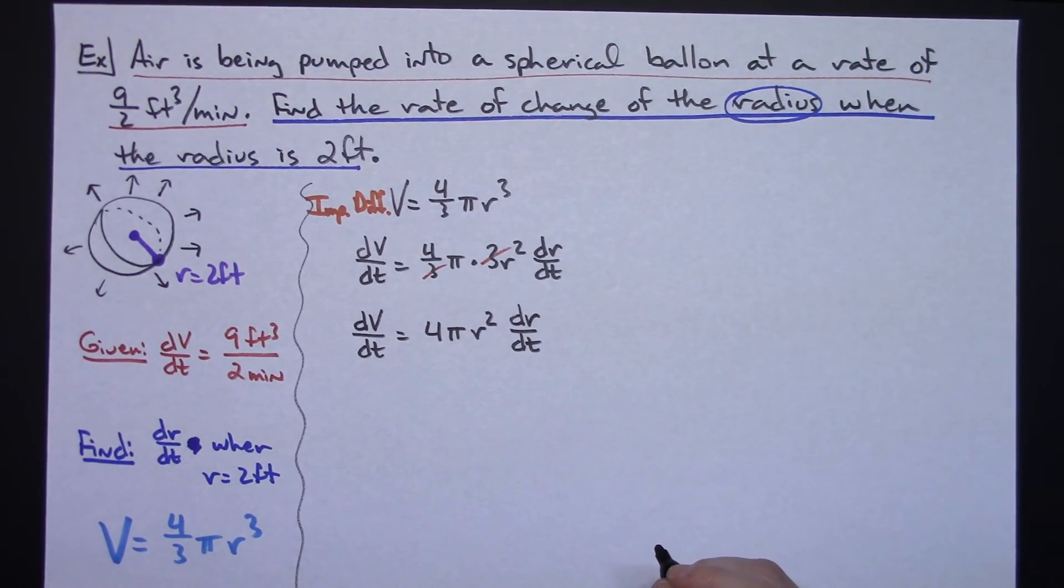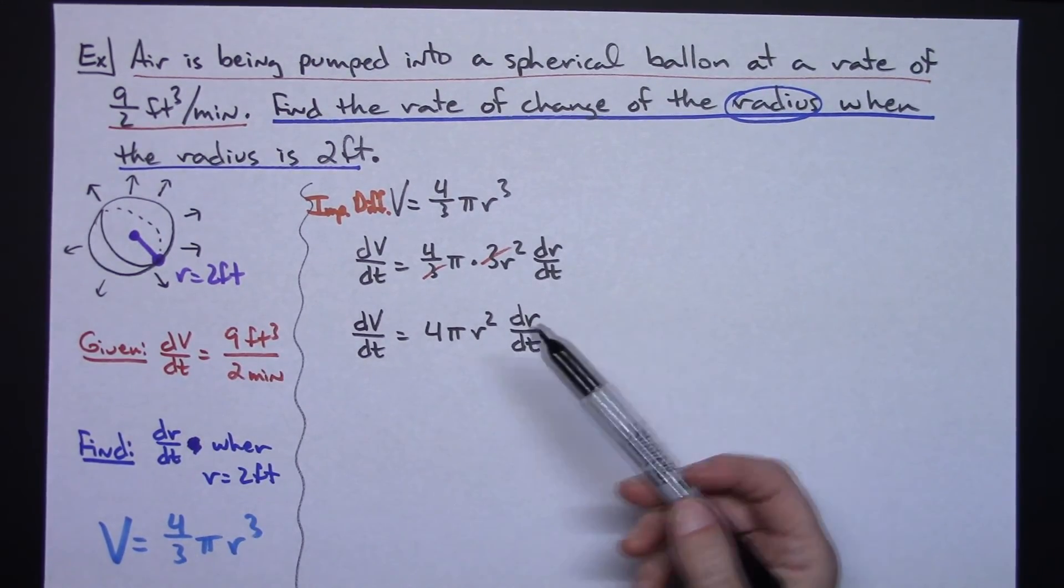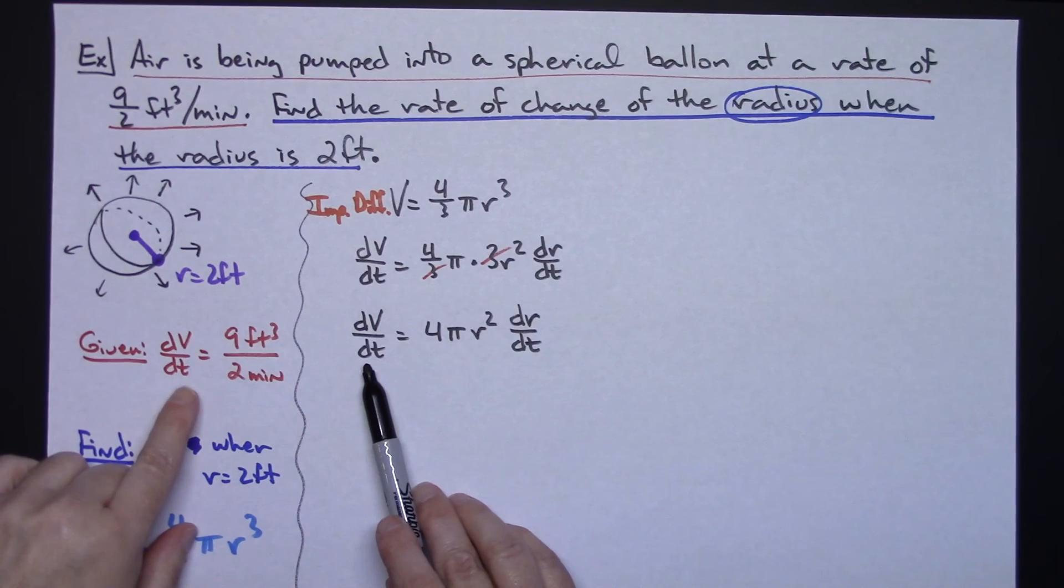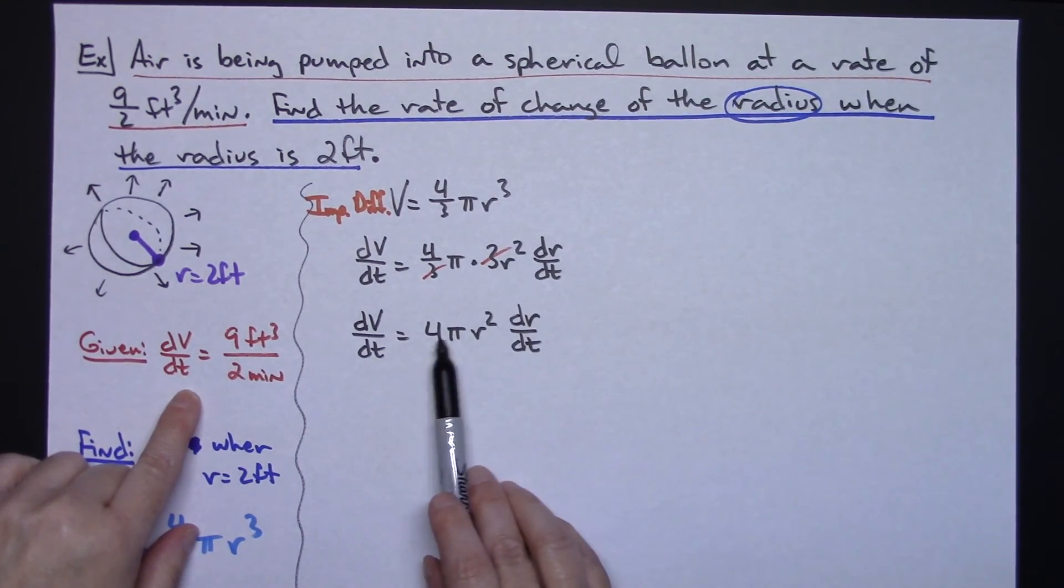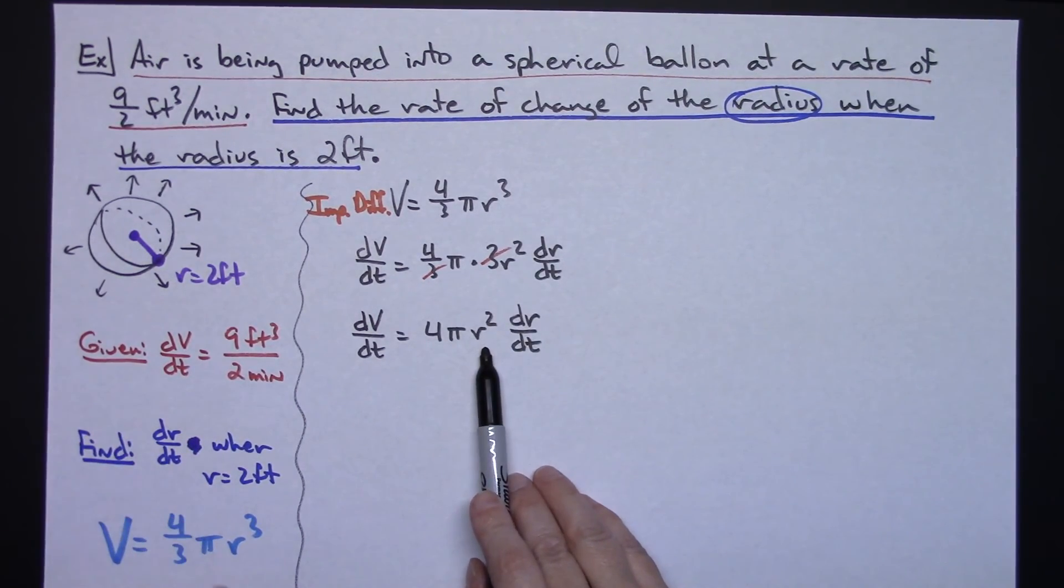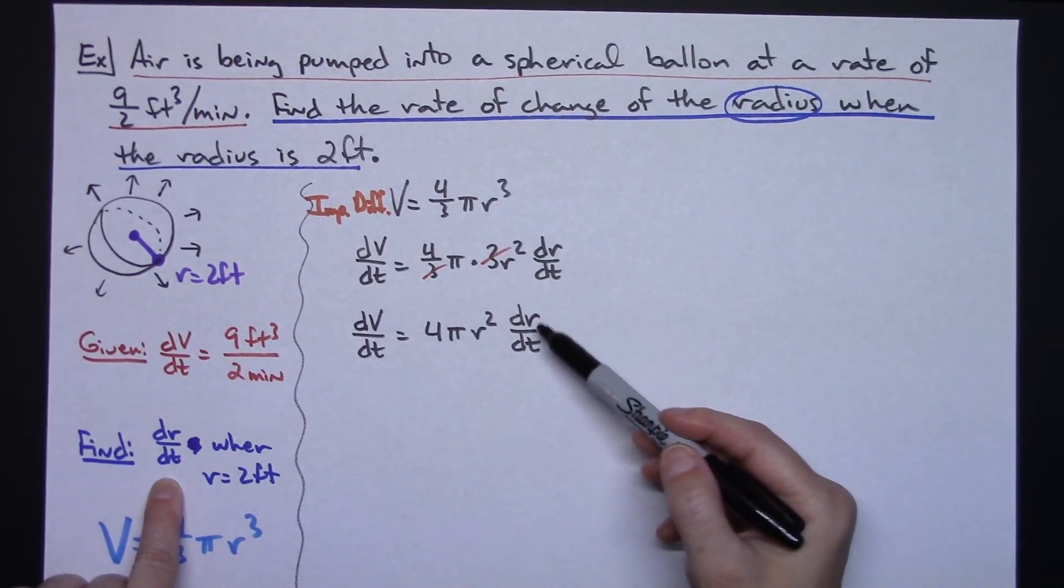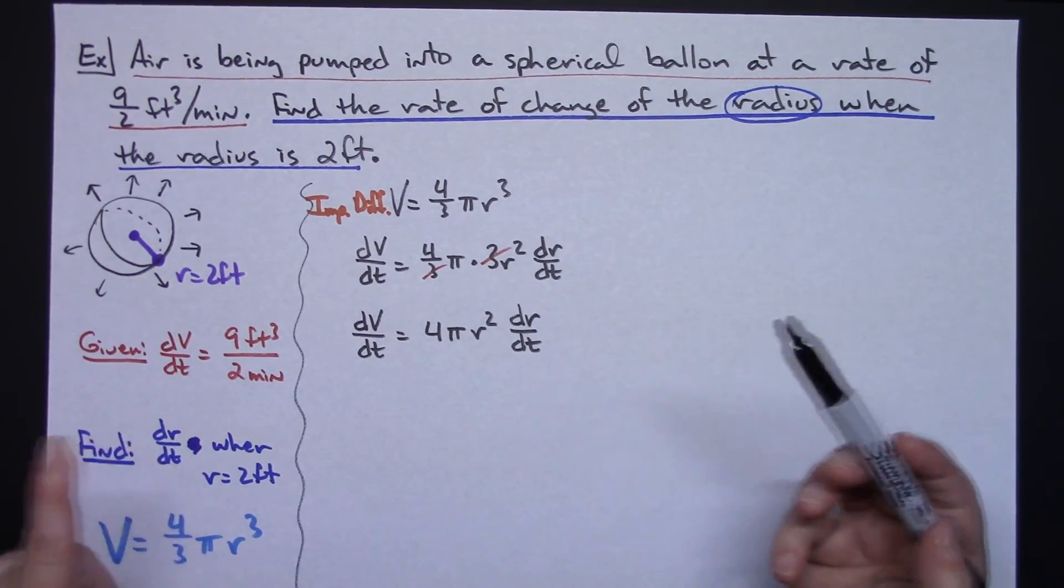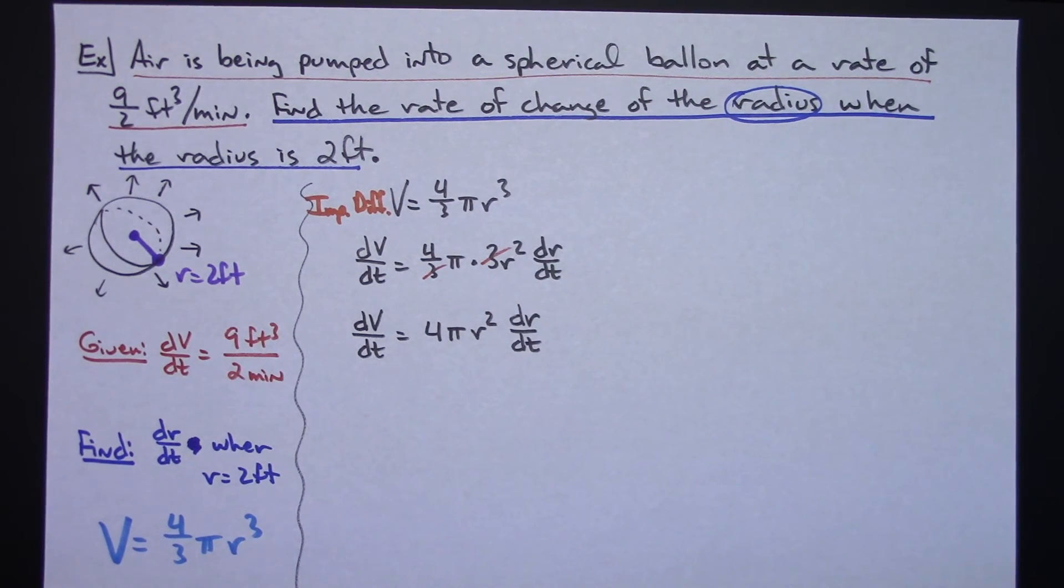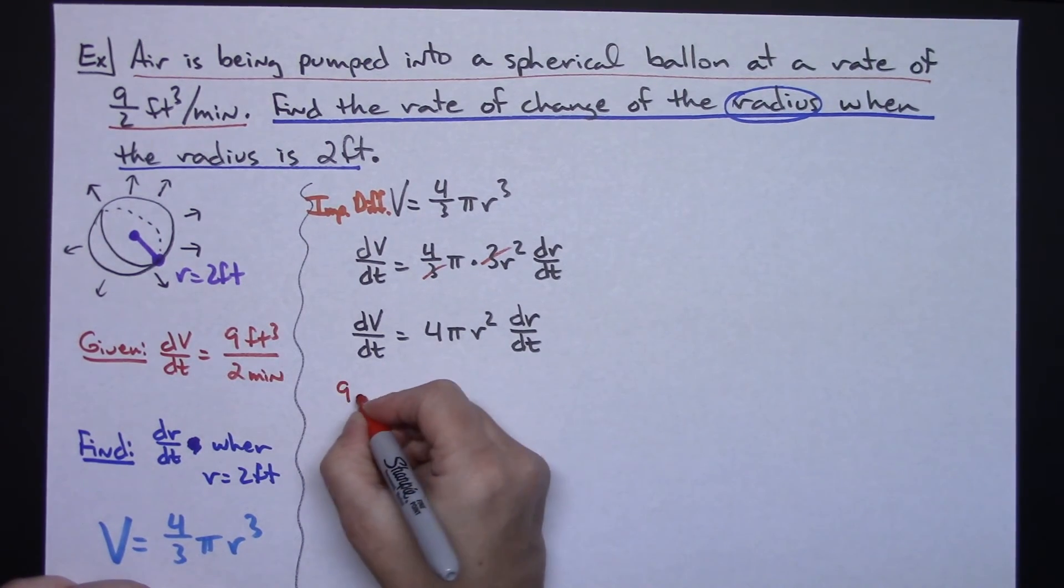Now at this point I can go through and I can start to see what I've got and what I can plug in. I was given dV/dt. The 4 and the π's are constant. When the radius is 2, I'm trying to find dr/dt. So I have enough variables there that I can plug things in. So I'm going to plug my given in as 9 feet cubed over 2 minutes.